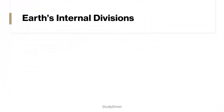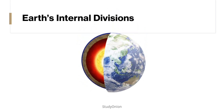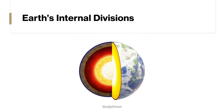Let's have a look at the Earth's internal divisions. The Earth contains four major internal divisions: inner and outer core, mantle, and crust. The crust consists of giant tectonic plates that are floating and moving around on top of the mantle. The crust is the part that we stand on and has an average thickness of 50 kilometres.